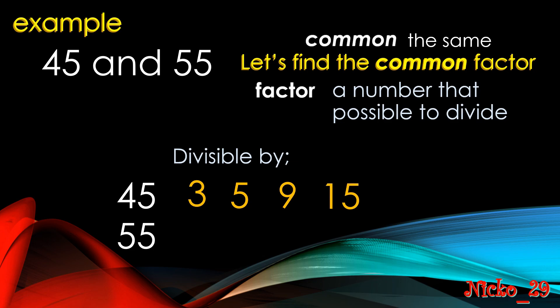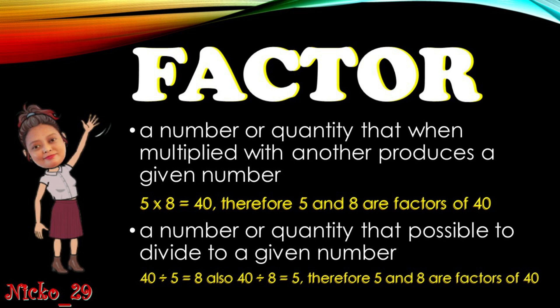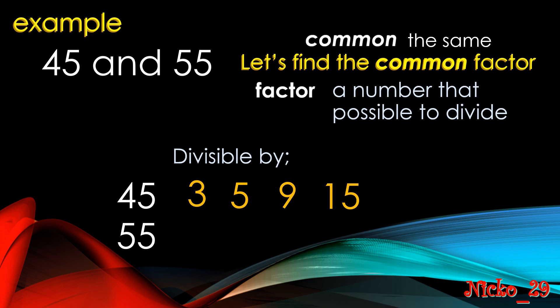When we use 3 to divide 45, the answer is 15, so 45 is also divisible by 15. If we use 5 to divide 45, we get 9, so 45 is also divisible by 9. Remember the meaning of factor — numbers that when multiplied give the given number. When we list the factors of 55, we have 5 and 11 only, so 5 is the only common factor of 45 and 55.